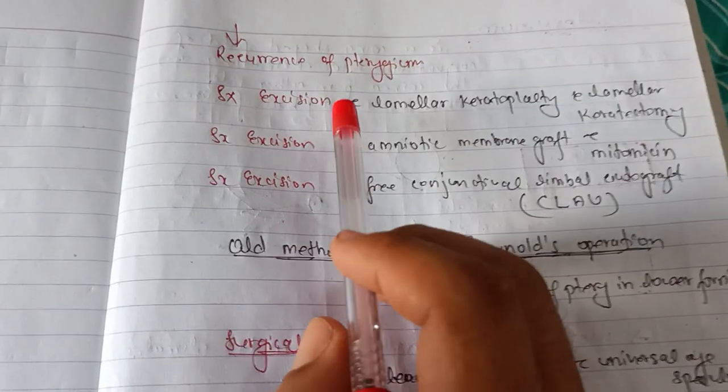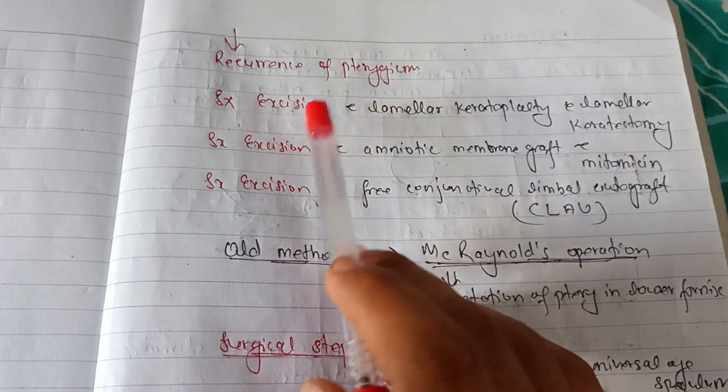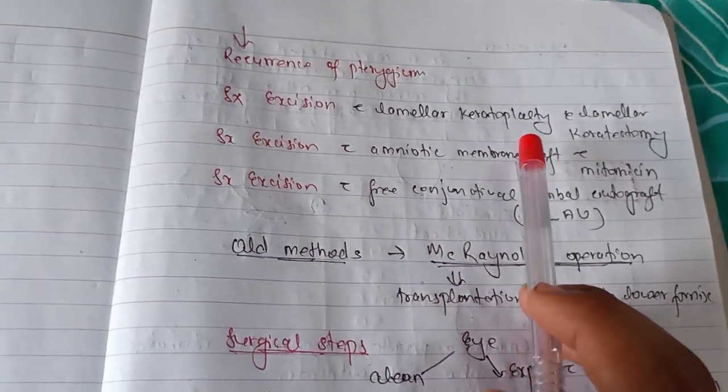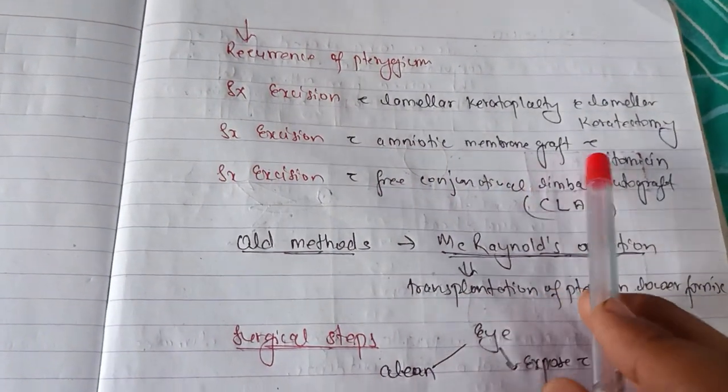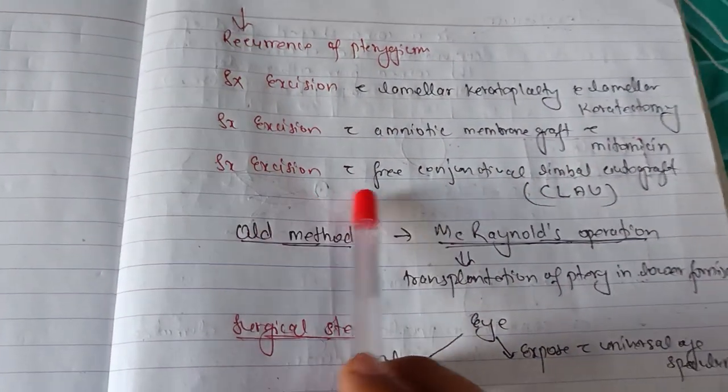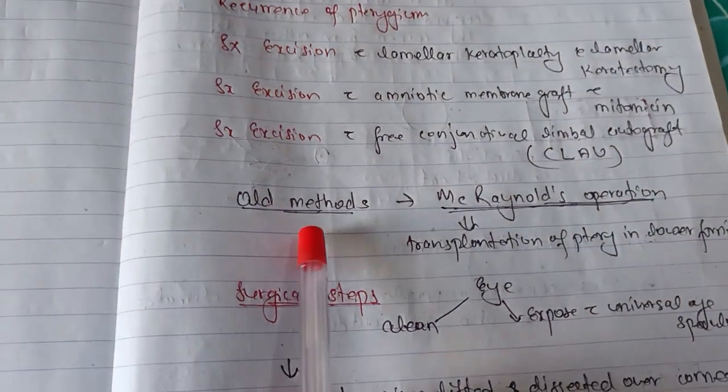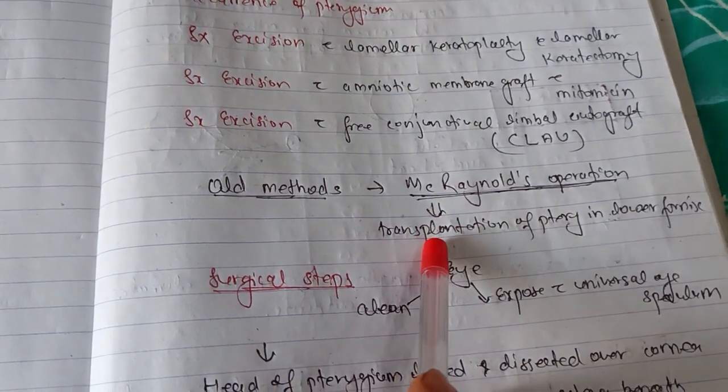To prevent recurrence of pterygium, there is surgical excision with lamellar keratoplasty, keratectomy, surgical excision with amniotic membrane graft with mitomycin, surgical excision with free conjunctival limbal autograft (CLAU). There is an old method called McReynolds operation where there is transplantation of pterygium into the fornix.